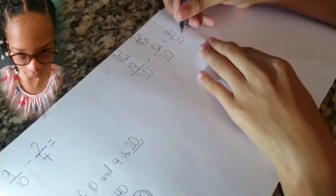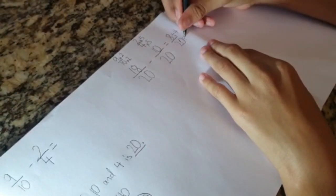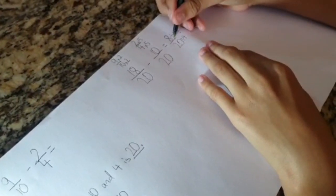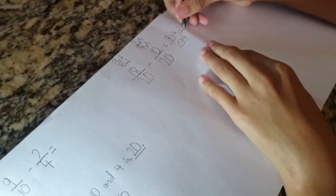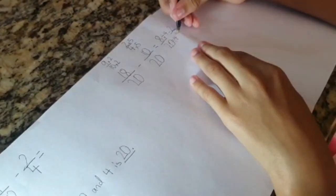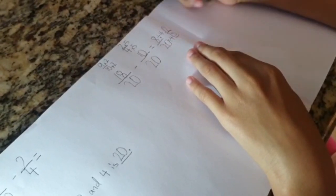The common factor of 8 and 20 is 4. So, 8 divided by 4 is 2 and 20 divided by 4 is 5. Your answer is 2 fifths.